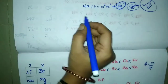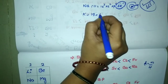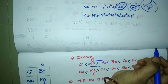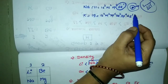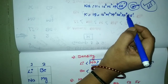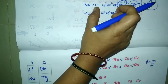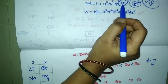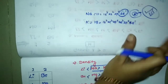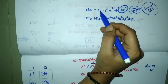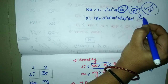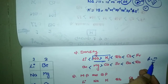For potassium, atomic number 19, the configuration is 1s² 2s² 2p⁶ 3s² 3p⁶ 4s¹. Comparing sodium and potassium, an extra shell is added in potassium — it has a fourth shell, whereas sodium has only a third shell. So the size of sodium is much less than potassium. If the size is less, the outermost electron finds more inward pull and greater attraction toward the nucleus, so the volume decreases and density increases.